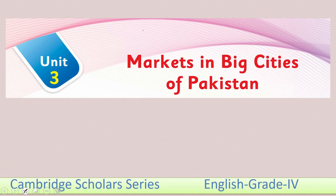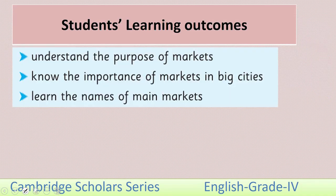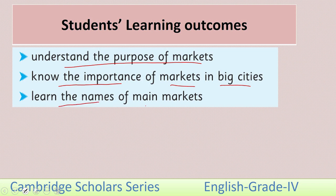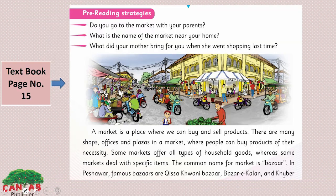We will start our lesson from Unit No. 3: Markets in Big Cities of Pakistan. The SLOs of this lesson are: understand the purpose of markets, know the importance of markets in big cities, and learn the names of main markets. Now look at page No. 15.